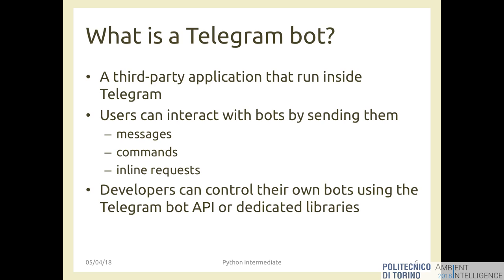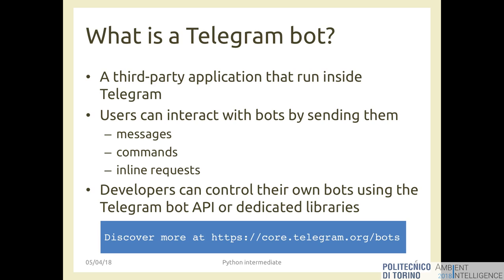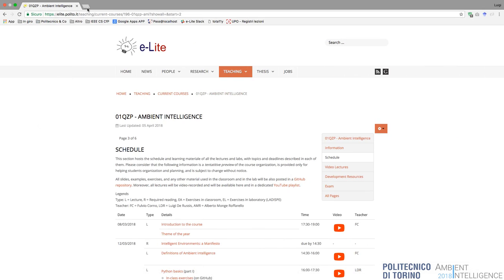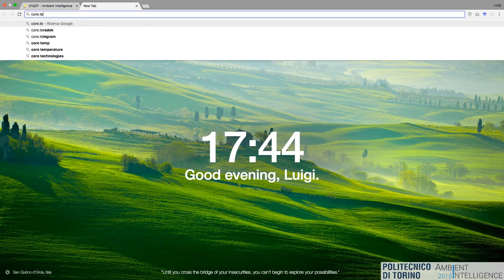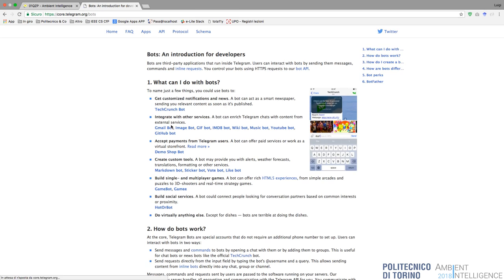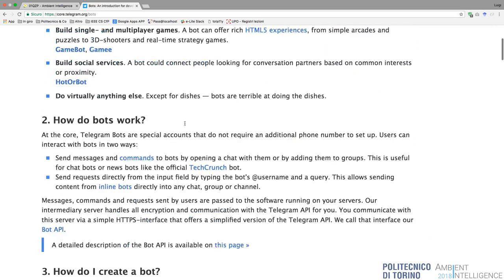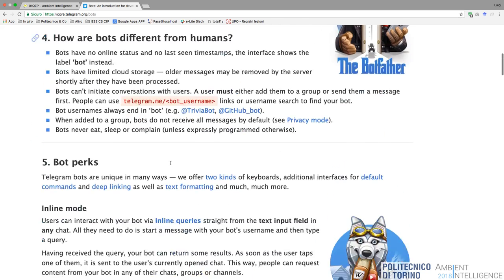You can call the Telegram web API directly or use Python, Java, C#, or other language libraries provided by Telegram or third-party developers. You can discover more about Telegram bots on their website where you can see what you can do with a bot, how they work, and how to create bots.